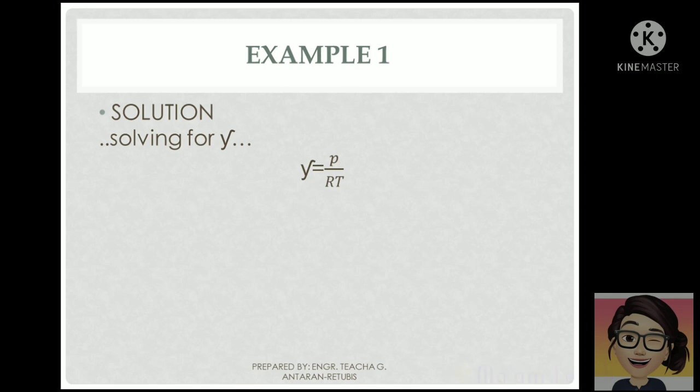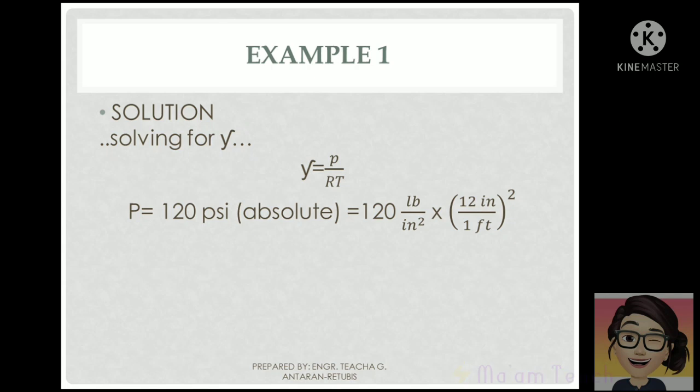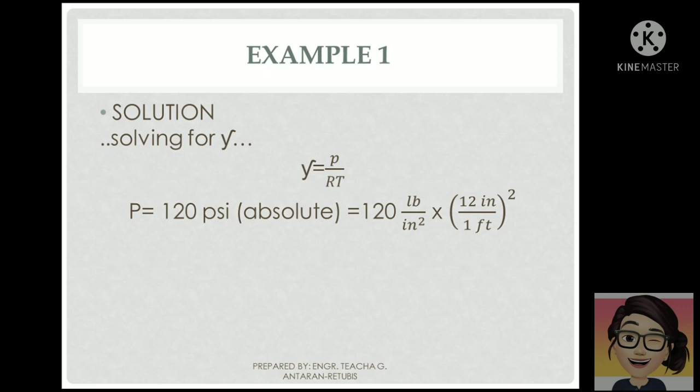For example, our pressure is 120 psi or pounds per square inch. We have to convert square inches into square feet because later we have to cancel it out. Using the conversion where one foot equals 12 inches...